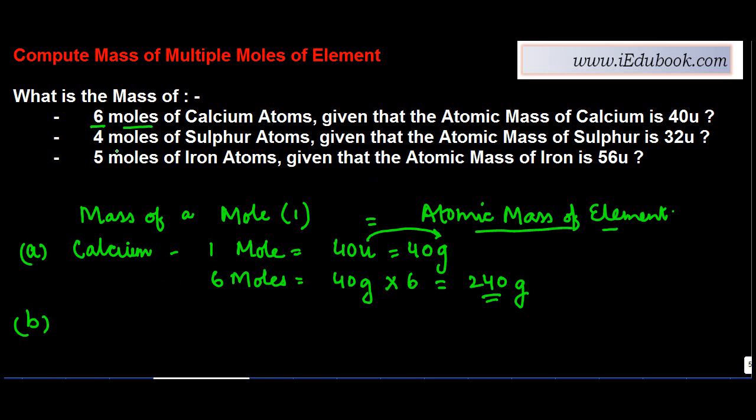If I tell you to find out the mass of four moles of sulfur, four moles of sulfur, that is nothing but four times the atomic mass of sulfur, or four times 32u. U I'll replace with grams. So four times 32 will give you 128 grams.